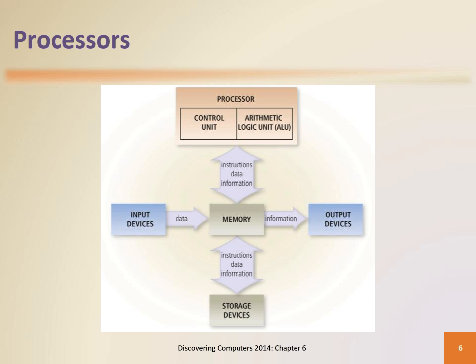Processors contain a control unit and an arithmetic logic unit that work together to perform processing operations. The control unit is the component of the processor that directs and coordinates most of the operations in the computer. The arithmetic logic unit performs arithmetic, comparison, and other operations.